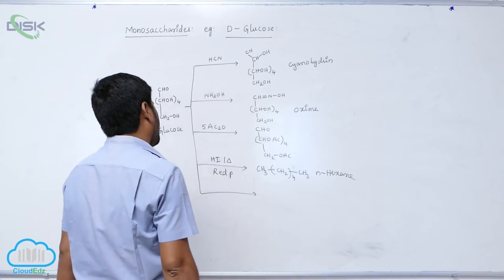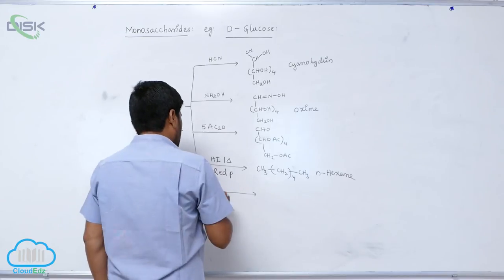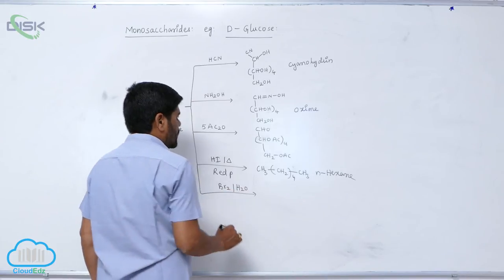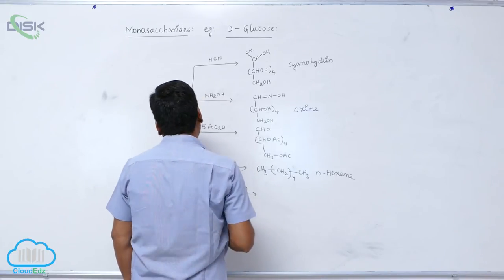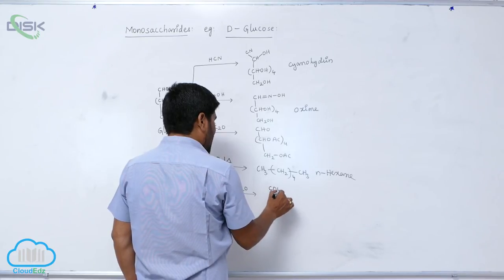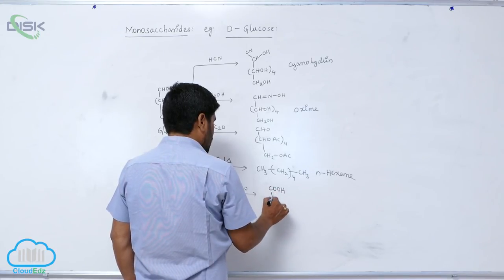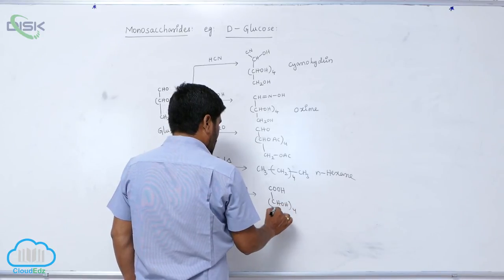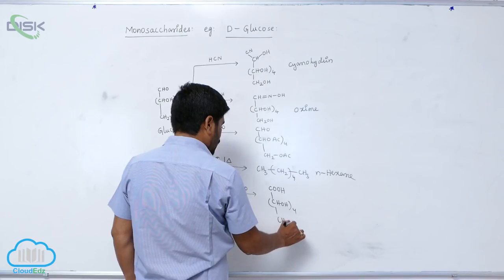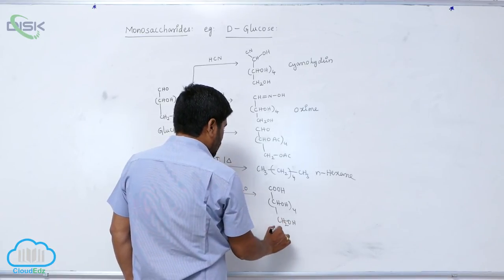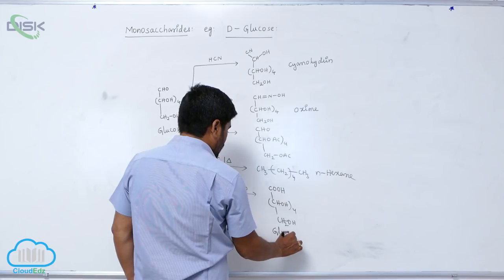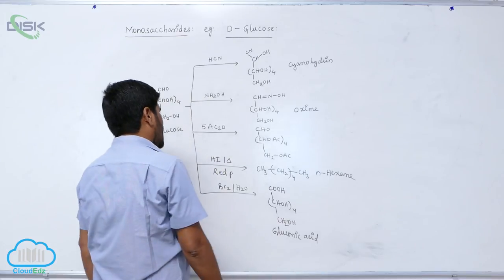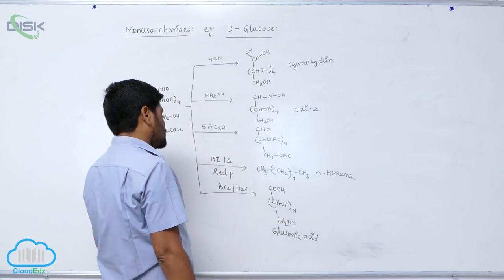Next one is concentrated bromine in presence of water. The aldehyde group converts into acid: CHOH four times then CH2OH. This is known as gluconic acid - it is a monocarboxylic acid.